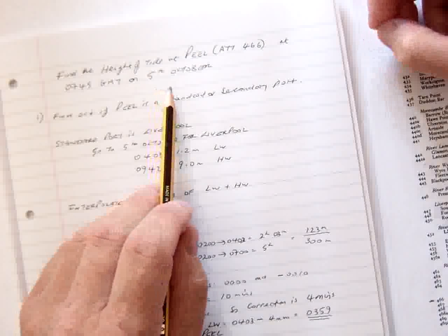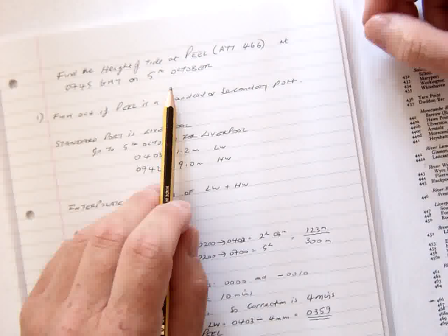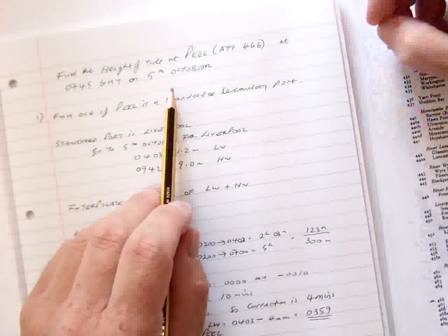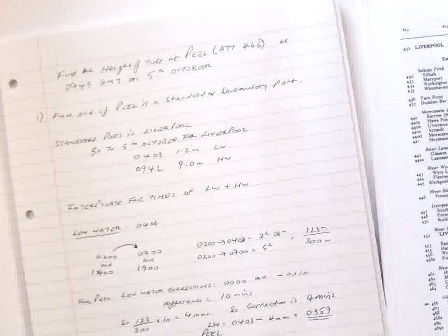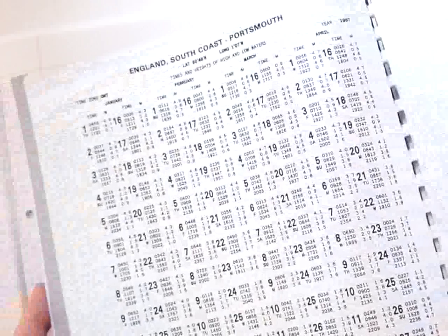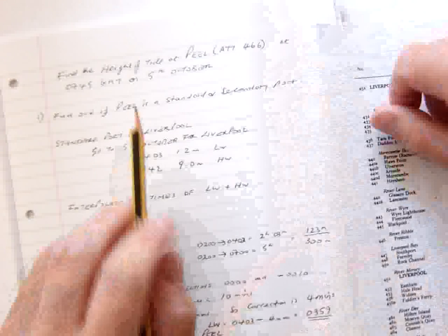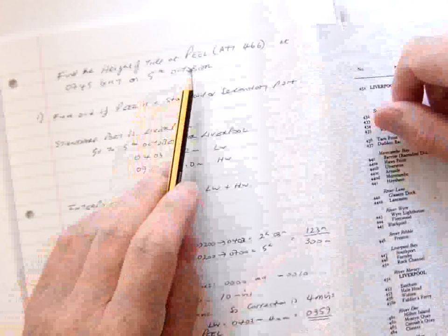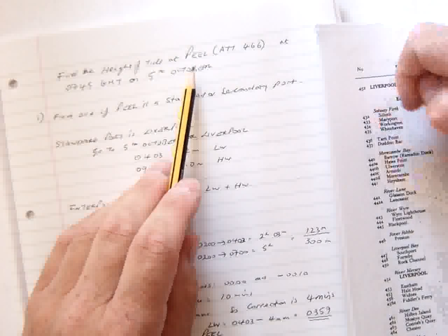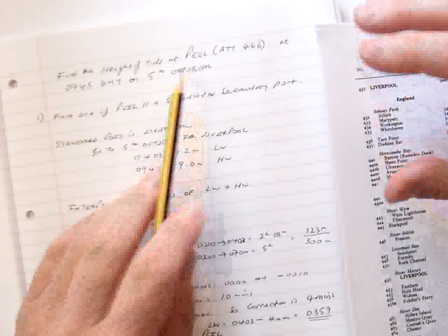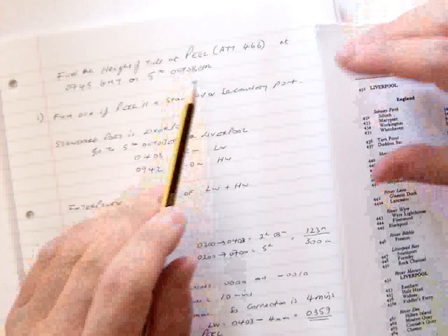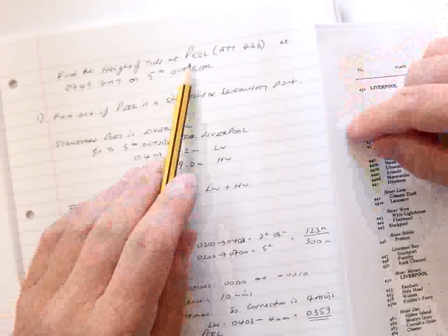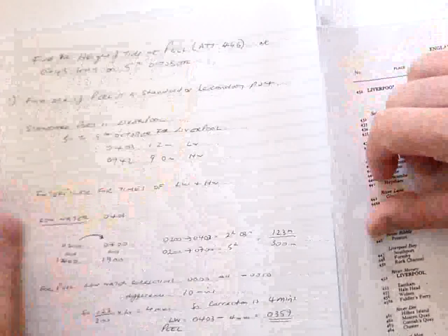Peel is a secondary port. Secondary ports don't have their own graphs and don't have their own page with high and low water, typically like you see in the tide book. So what we have to do is find the standard port that liaises with Peel. In other words, it's the standard port that has the information we use to obtain information about Peel.